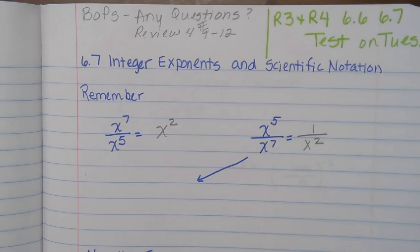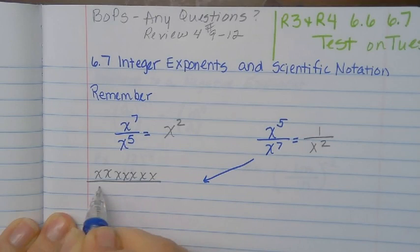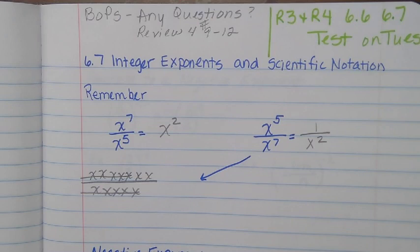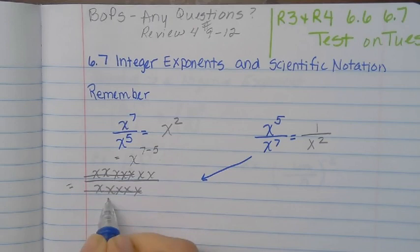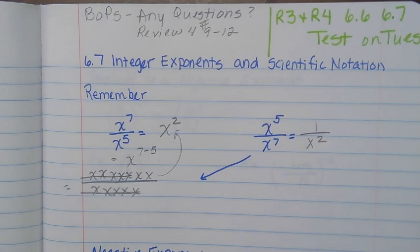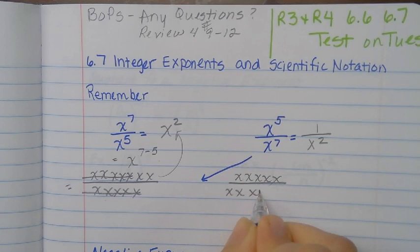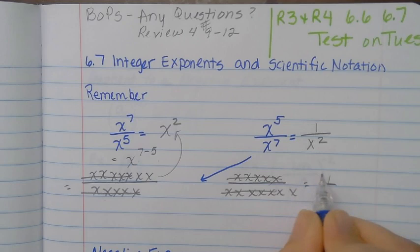Okay so let's go back and look at these real quick. Remember we can expand these out if we want, and then cross off like ones in the numerator and denominator so we get x squared. We also can use that shortcut and subtract the exponents — either way works. Same with the other one: we can expand it, cross off five in the numerator and five in the denominator, and we're left with a one in the numerator and x squared in the denominator.